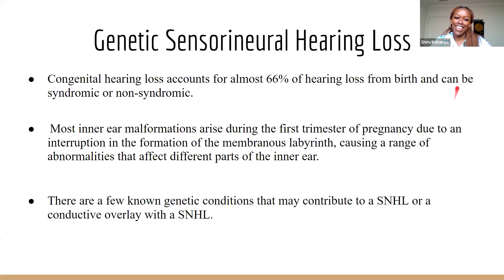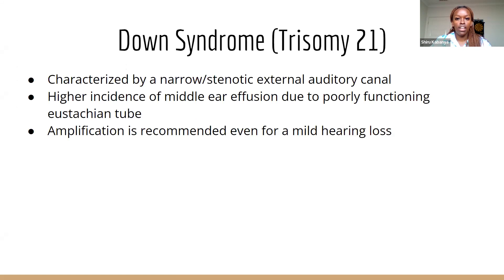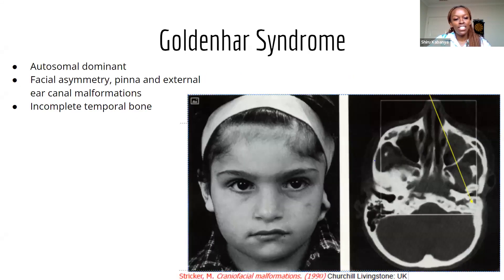The first is Goldenhar Syndrome, an autosomal dominant condition characterized by facial asymmetry, pinna and external ear canal malformations such as pre-auricular tags, sinus tracts, microtia, stenosis of the external auditory canal or an auricular deformity, and incomplete development of the temporal bone. In most cases the hearing loss is a conductive overlay with a sensorineural component; in very rare cases it can be complete sensorineural hearing loss. Depending on the malformations, a hearing aid or a BAHA would be appropriate.